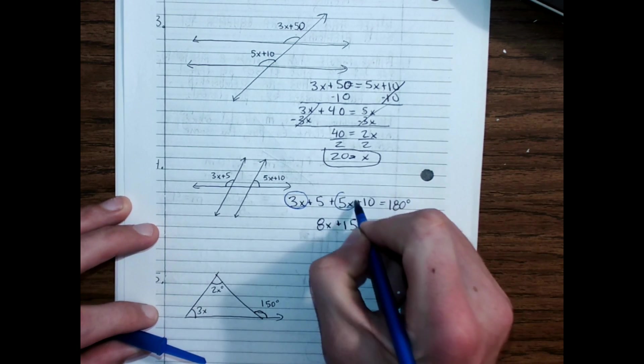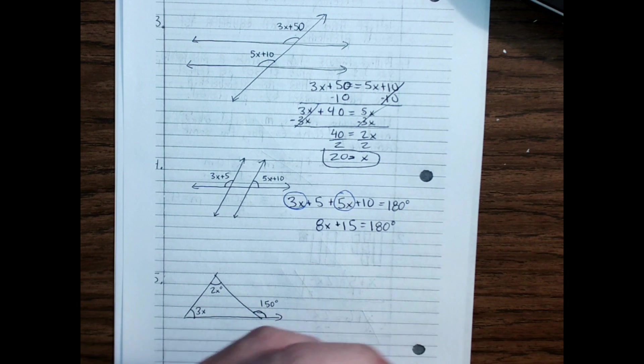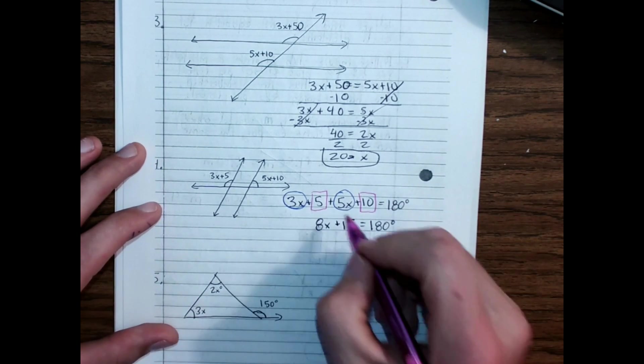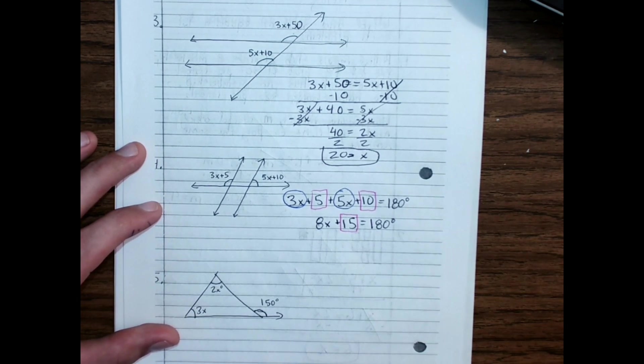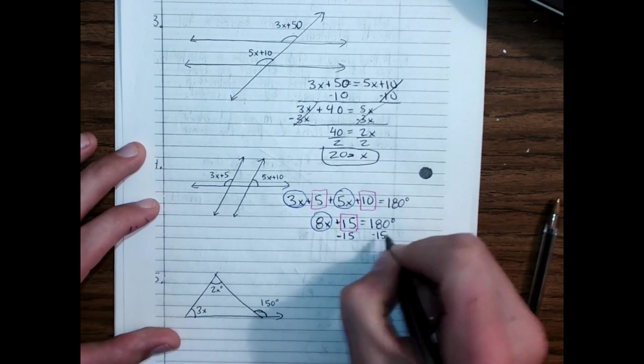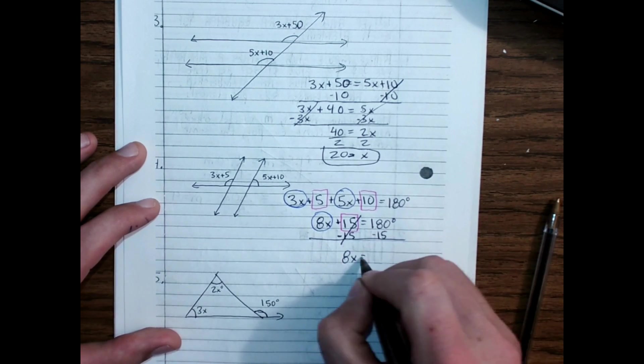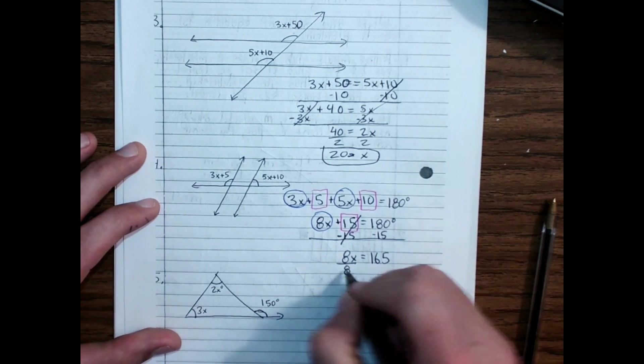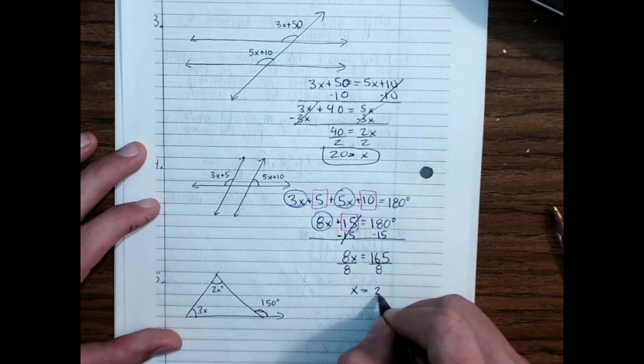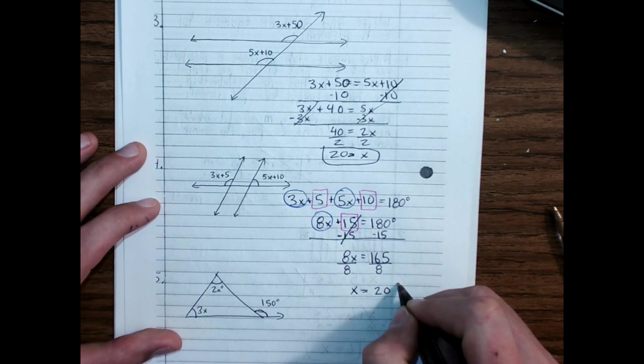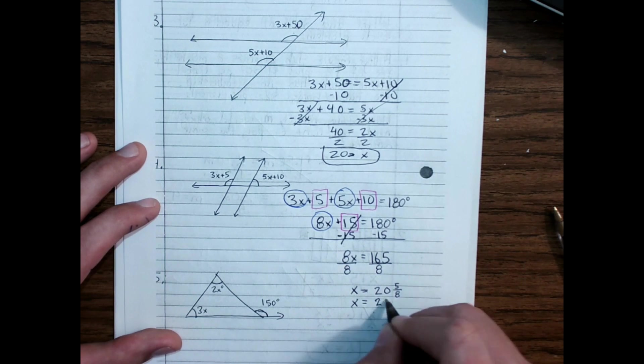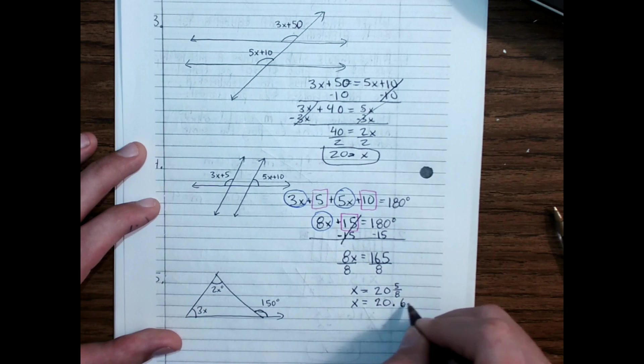That step right there is called combining like terms. I have 3X's and 5X's both on the same side. And then I have some constants. 5 units and 10 units, both on the same side. So I put those together. Only then can I start canceling. Subtract 15 from both sides. 0 pair. 8X equals 165. Divide both sides by 8. And that is not going to come out nice and even. That's going to be 20 with some sort of remainder. 20 and 5 eighths. Or X equals 20.625, I think.